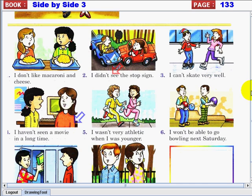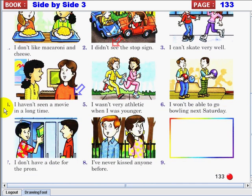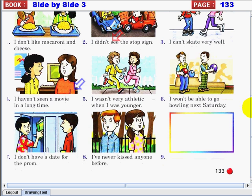Number three, I can't skate very well. Number four, I haven't seen a movie in a long time. Number five, I wasn't very athletic when I was younger. Six, I won't be able to go bowling next Saturday. Okay, and then I don't have a date for the prom.